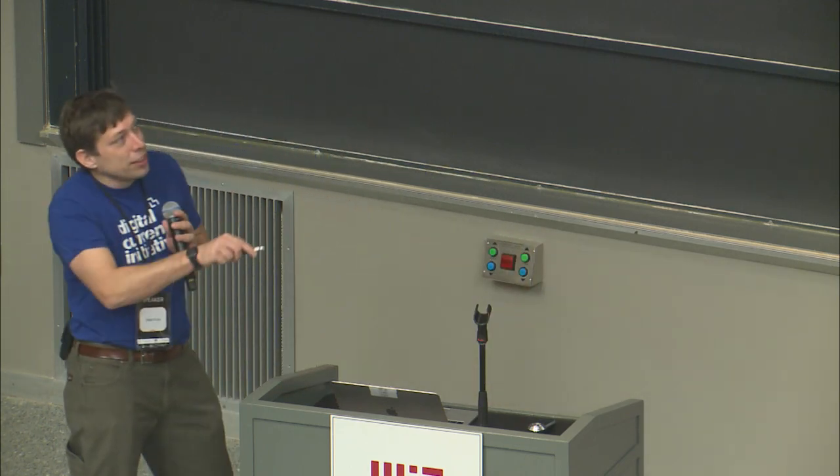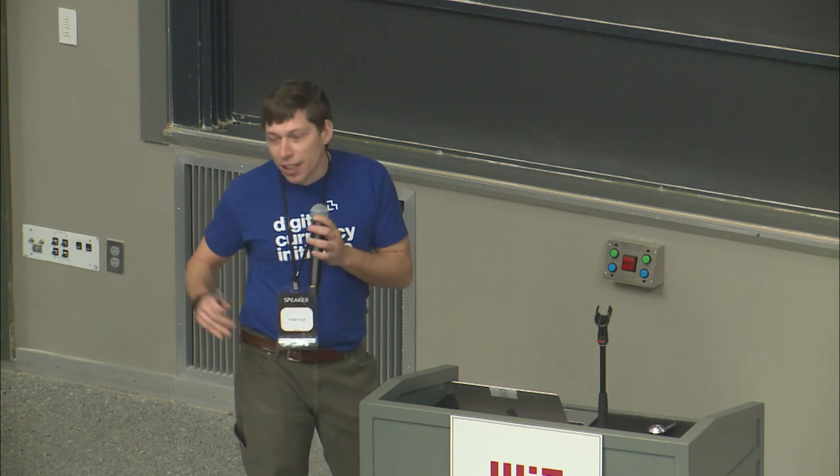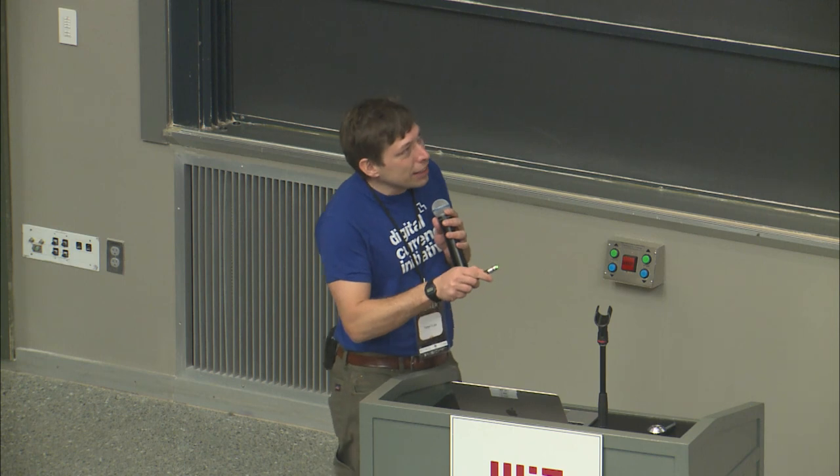A full node can do all these things. You could propagate messages — you don't have to. You could have a wallet attached and receive and send coins. You can serve blocks to other people. We run a node here at MIT Digital Currency Initiative — it's two terabytes a month of outgoing bandwidth. It's very variable depending on the first derivative of Bitcoin price: if the price is going up, everyone's downloading Bitcoin and syncing blocks; when the price goes down, there's not much traffic. As a full node you can check the work, check the transactions, and even mine.